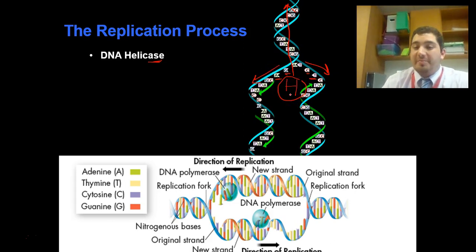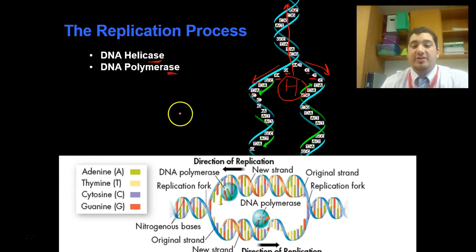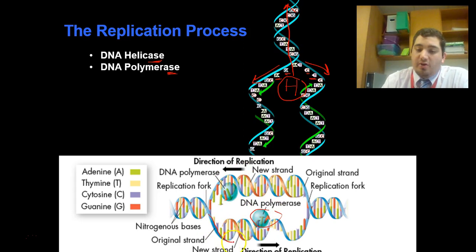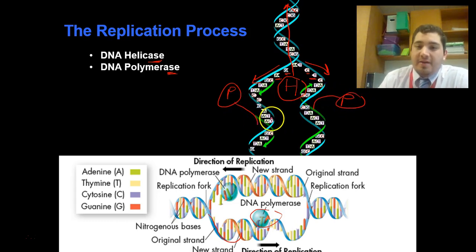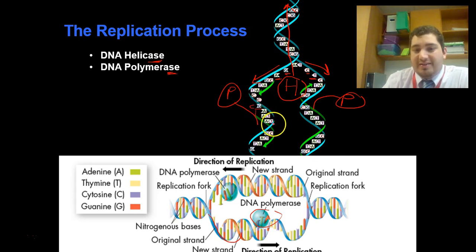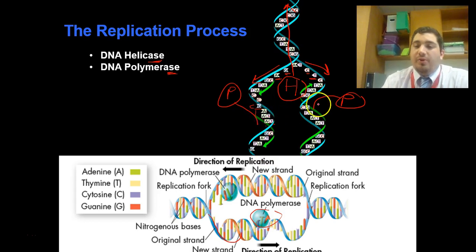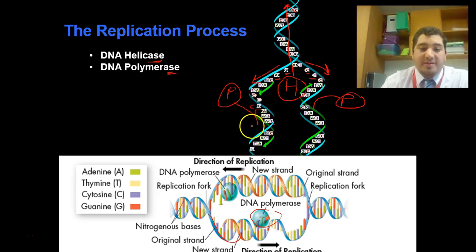After helicase opens up and splits the DNA, another enzyme called DNA polymerase comes through and starts to build a new strand of DNA. DNA polymerase travels down the open strand and starts adding nucleotides in the correct order — everywhere there was a G, it puts a C; everywhere there was an A, it puts a T. The polymerase works all the way down the DNA molecule until every nitrogenous-base nucleotide has a complementary base pair.